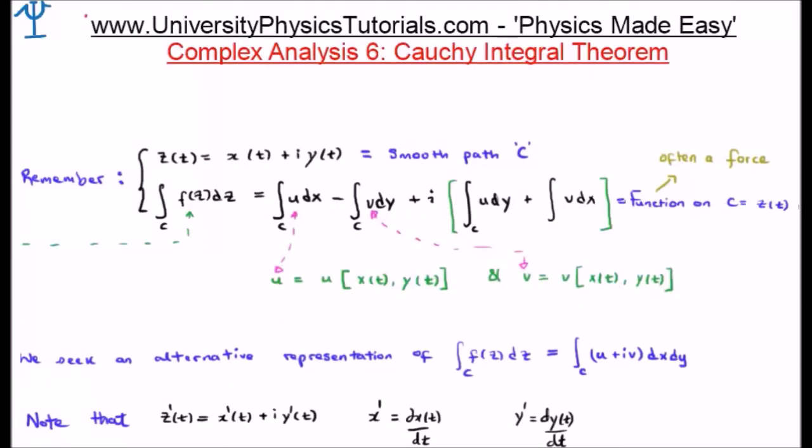Let's revise: we are integrating our function f(z), a complex function, along a curve C. C is another complex function which I'll call z(t), and z(t) can be parameterized using the parameter t as x(t) plus i times y(t).